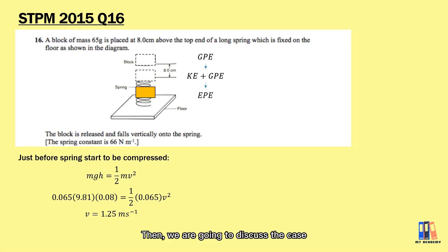Then we're going to discuss the case where the spring is compressed until maximum compression. You can imagine that the object will start to decelerate. Hence, the kinetic energy is converted into the elastic potential energy in the spring.